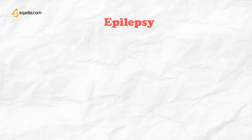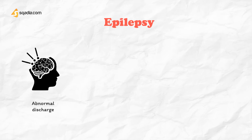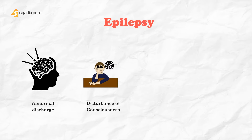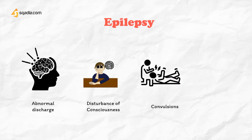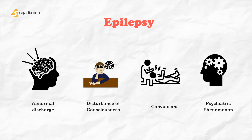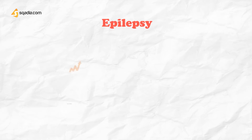Epilepsy is a chronic disease in which seizures result from the abnormal discharge of cerebral neurons. It includes loss or disturbance of consciousness, with or without characteristic body movements, convulsions, sensory or psychiatric phenomena. These episodes are unpredictable and their frequency is highly variable.